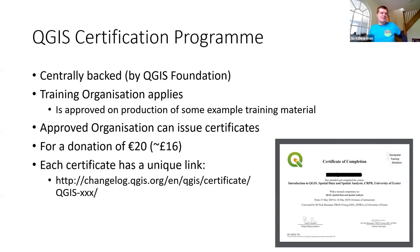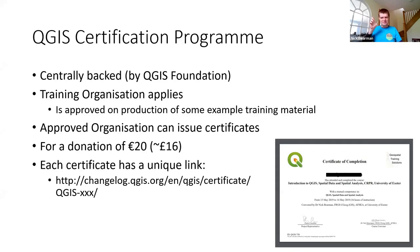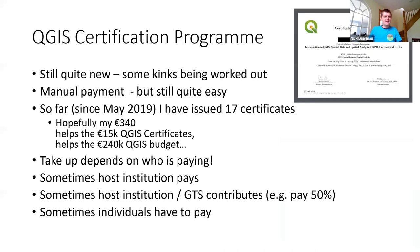The certification program is centrally backed by the QGIS Foundation. As a training organization, you apply to be approved by them and provide some materials — some examples of what you do to show you are a good trainer and can deliver good training courses. Once you're approved, you can issue certificates for people who attend these courses, and each certificate has a donation of 20 euros that goes to QGIS — about 16 pounds or so. When you actually generate the certificates, each one has a unique link with a URL on the bottom. Anyone can go to that URL and it will confirm that it's a legitimate certificate issued by QGIS.